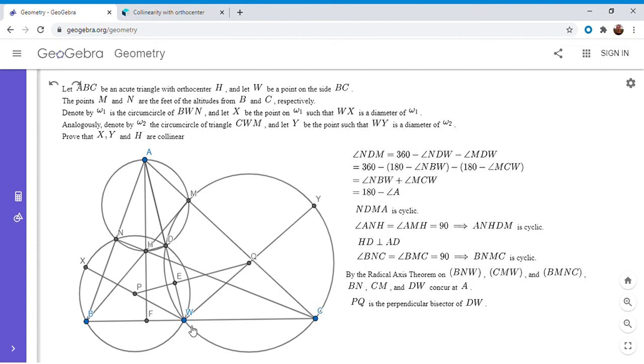So we're really almost there. Like I mentioned, we want to show X, Y, and H are collinear. But P, E, and Q are the respective midpoints of WX, WD, and WY, so we're essentially there. I'm going to write out the rest of the solution.